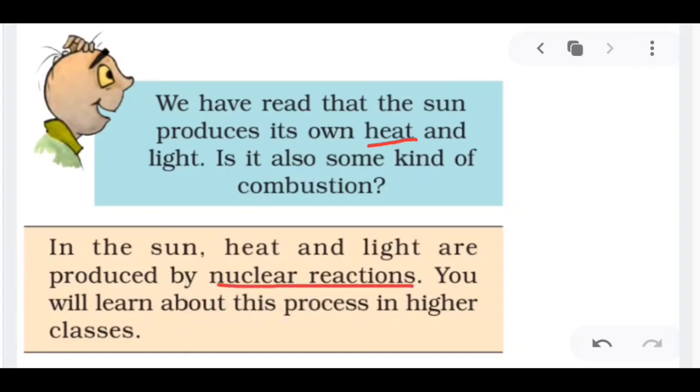In the sun, heat and light are produced by nuclear reactions. This is called nuclear reactions. You will learn about this process in the higher classes. Now I will tell you. What is present in the sun? Where is light coming from? From the sun. So there are two things in the sun: one is hydrogen, I will denote it H, and another element that is called helium. These are the two elements present in the sun.